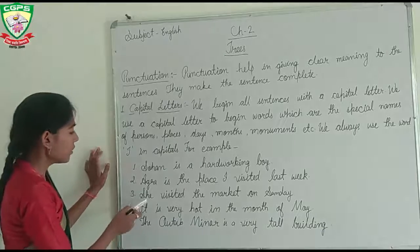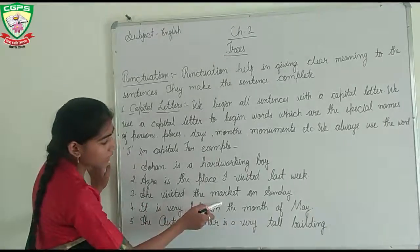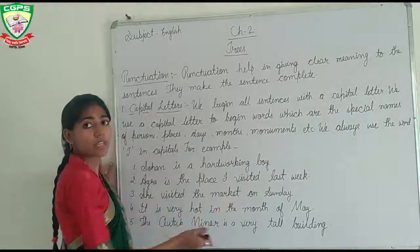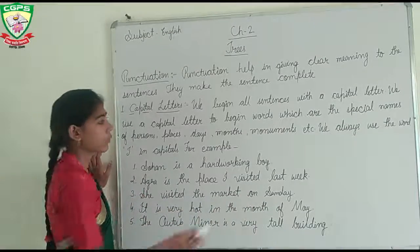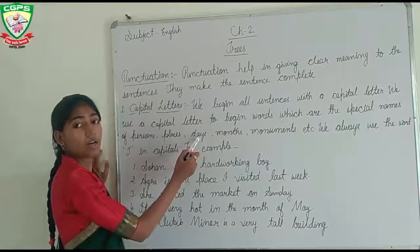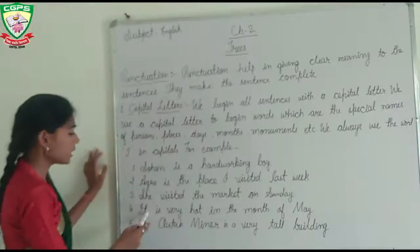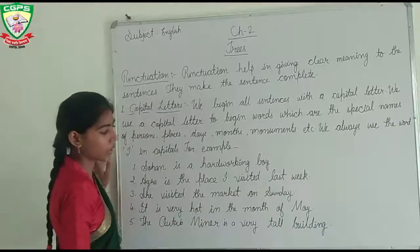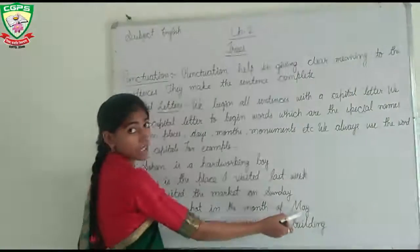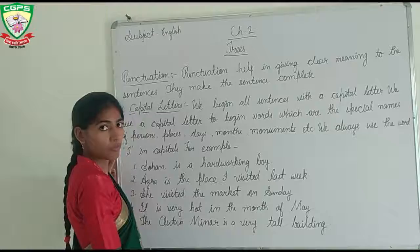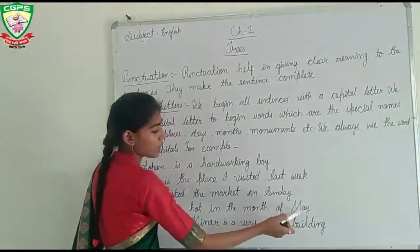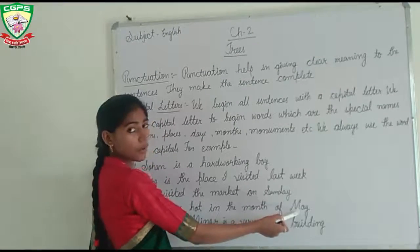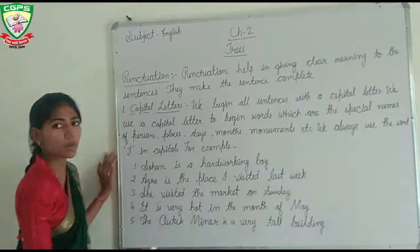Third example: 'She visited the market on Sunday.' Here, Sunday is a day name, and day names are always written with a capital letter. Another example: 'It is very hot in the month of May.' May is the name of a month, so we use a capital letter. Month names are always written with a capital letter.